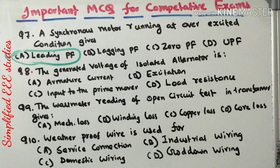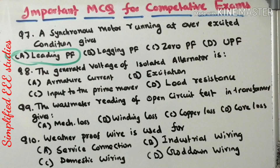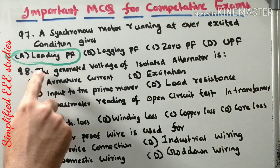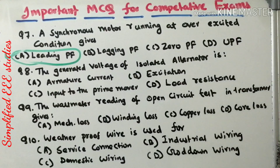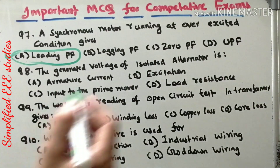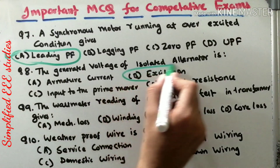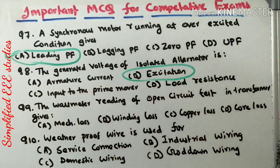Question 8: the generated voltage of an isolated alternator mainly depends on — armature current, excitation, input to the prime mover, or load resistance. The generated voltage of an isolated alternator mainly depends on the field current, that means excitation. The best answer is option B: excitation.